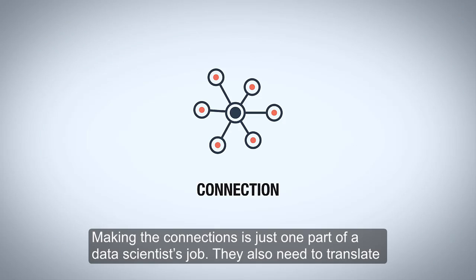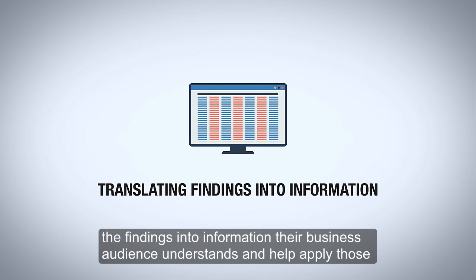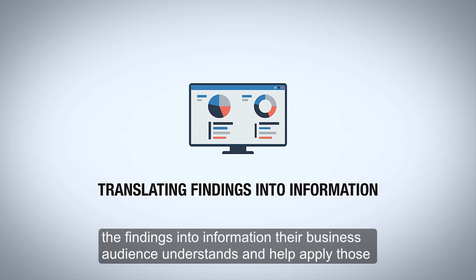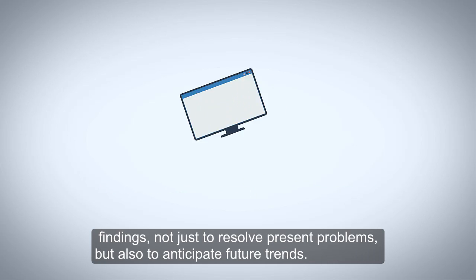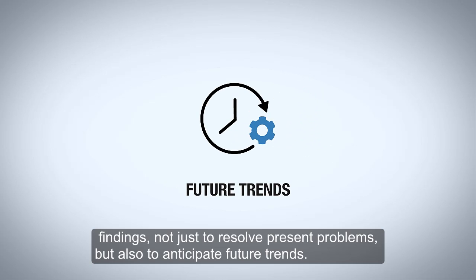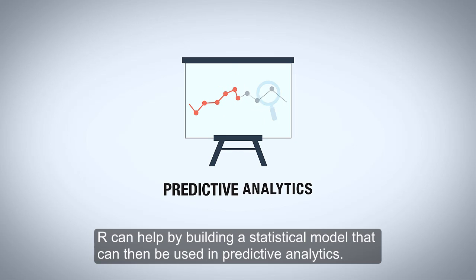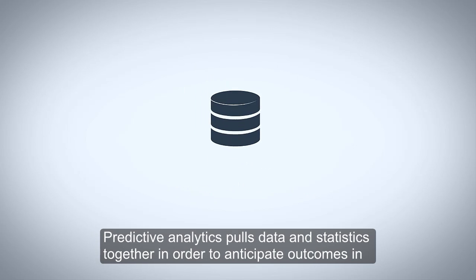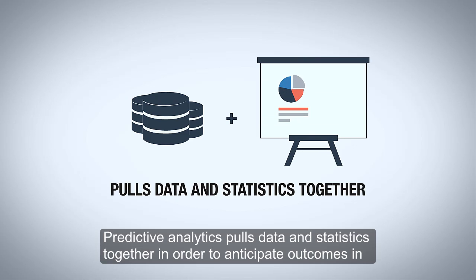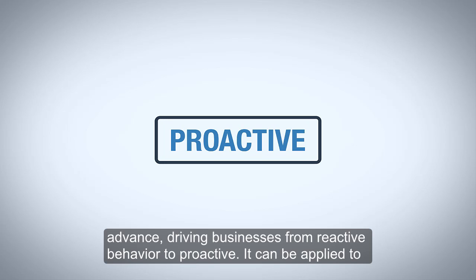Making the connections is just one part of a data scientist's job. They also need to translate the findings into information their business audience understands and help apply those findings, not just to resolve present problems but also to anticipate future trends. R can help by building a statistical model that can then be used in predictive analytics, which pulls data and statistics together in order to anticipate outcomes in advance, driving businesses from reactive behavior to proactive.